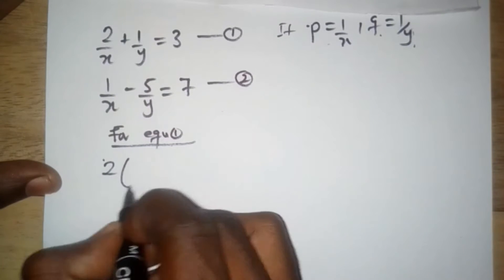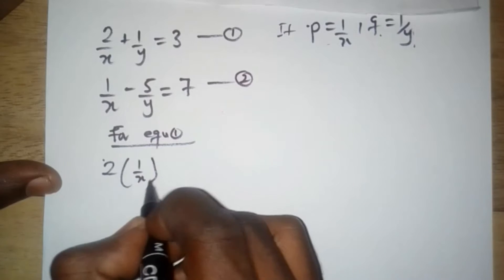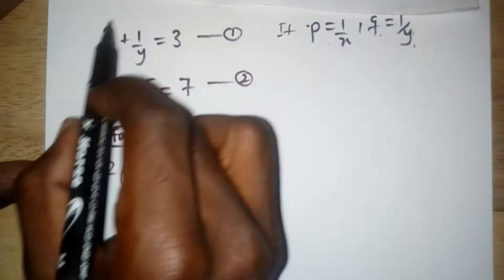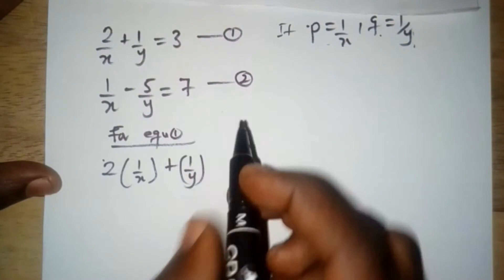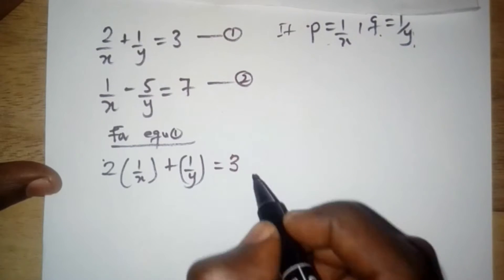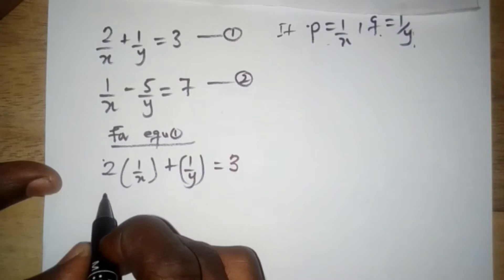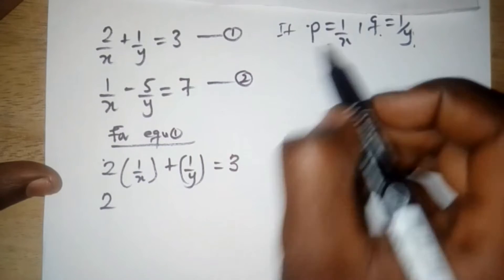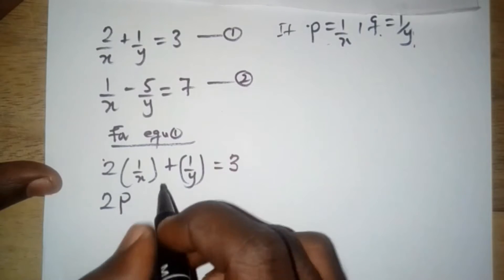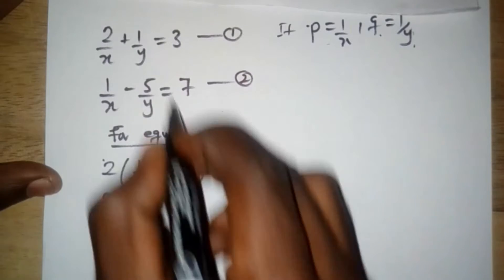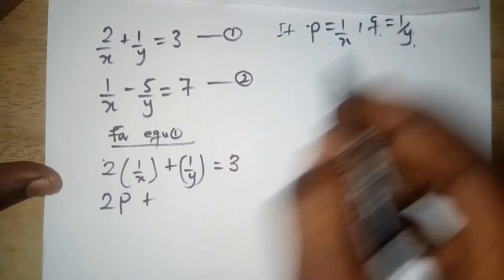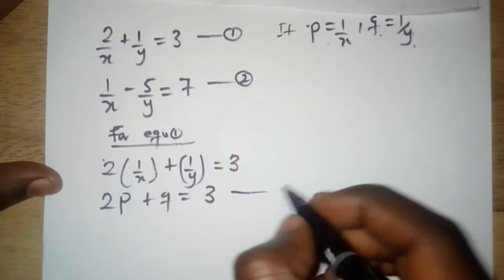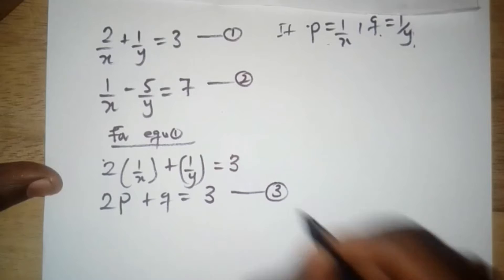For equation 1, we have 2 times 1 over x plus 1 over y, being equal to 3. We write this in the form where we can substitute. So we have 2 times p, since 1 over x is p, plus 1 over y which is just q, equal to 3. We can call this equation 3.